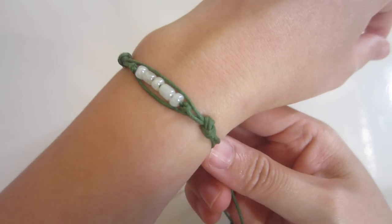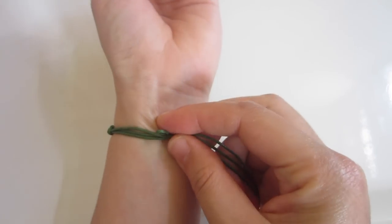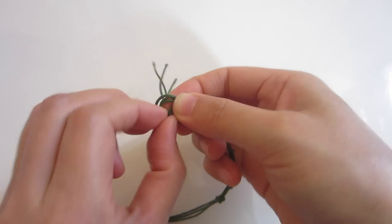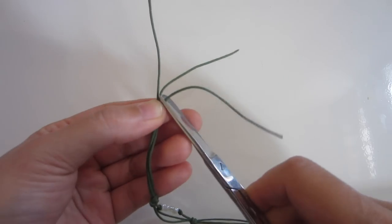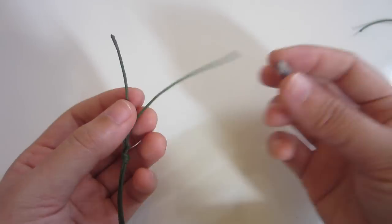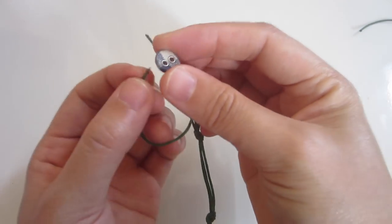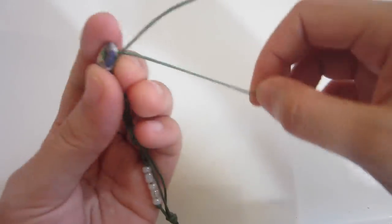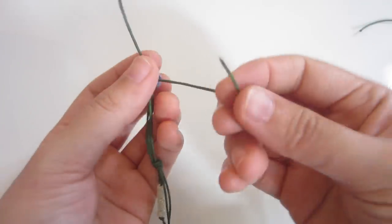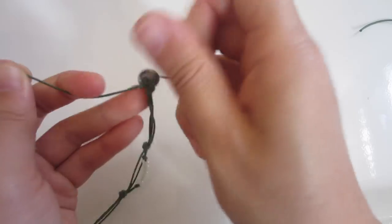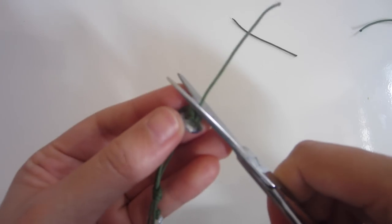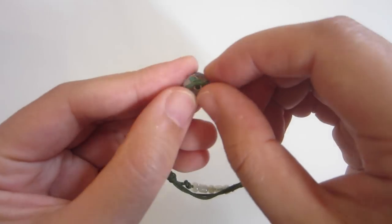Put the bracelet on your wrist and make sure it fits you. Tie another knot and trim off one cord. Use the two cords left to attach a button to make a closure. Tie two or three knots to secure it, trim off any excess, and that's it. Your bracelet is complete.